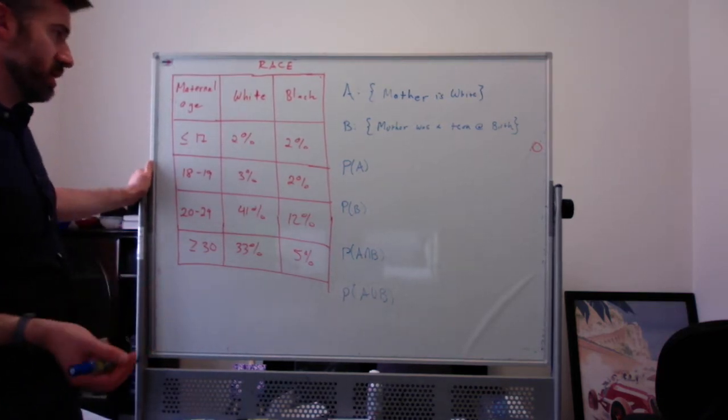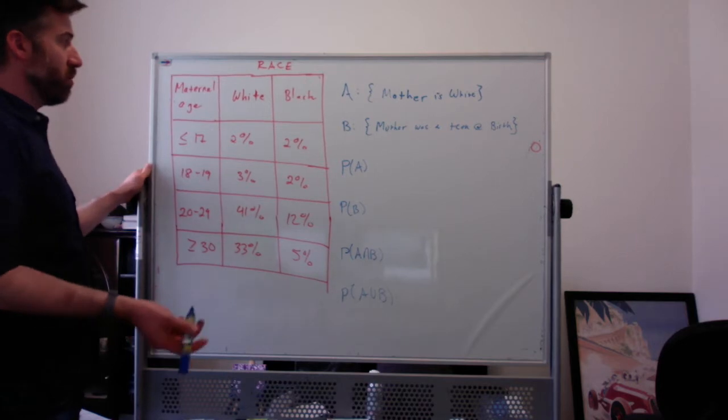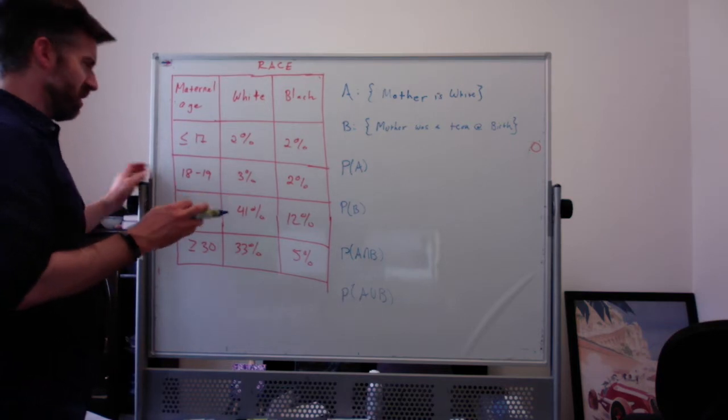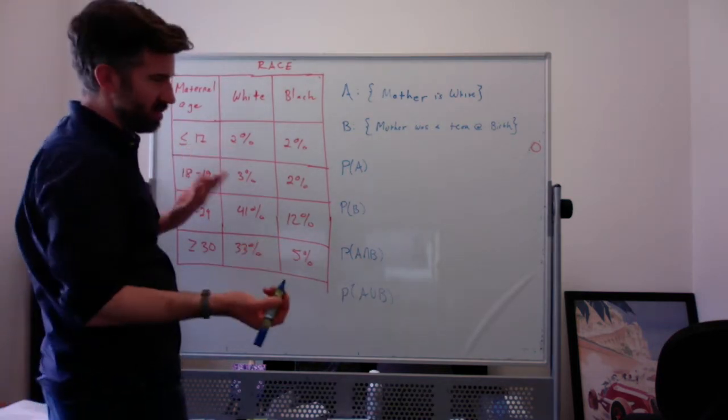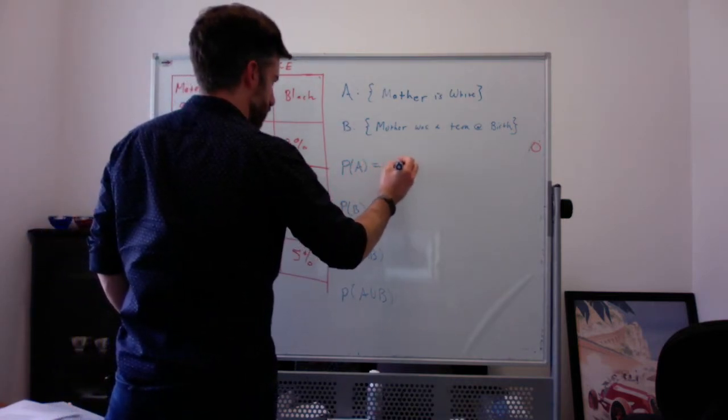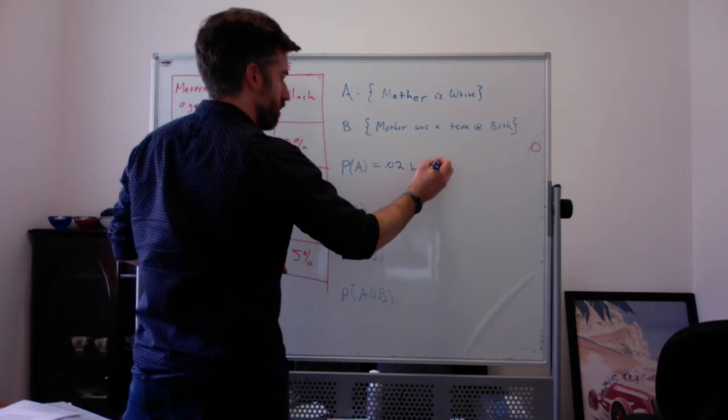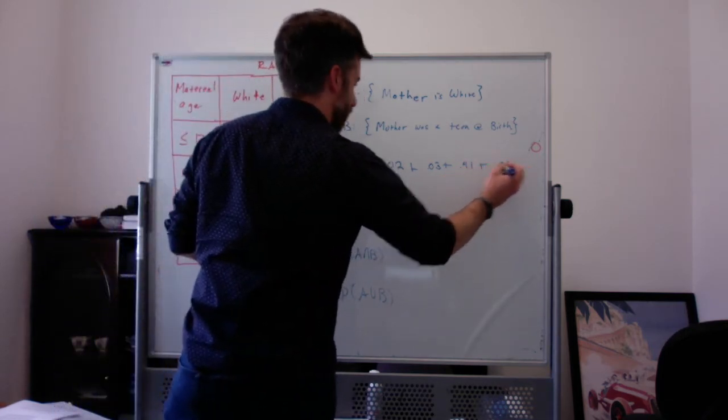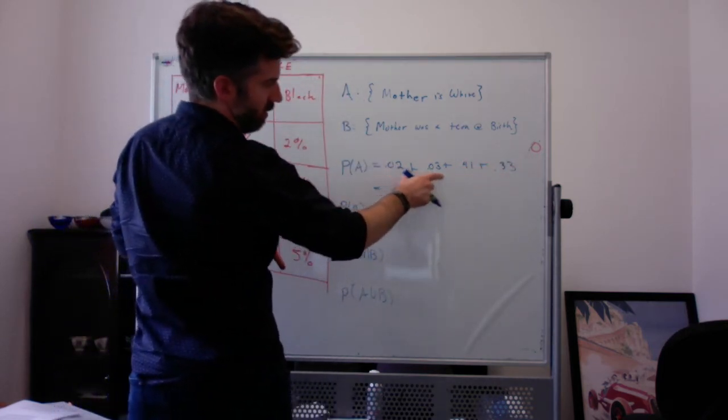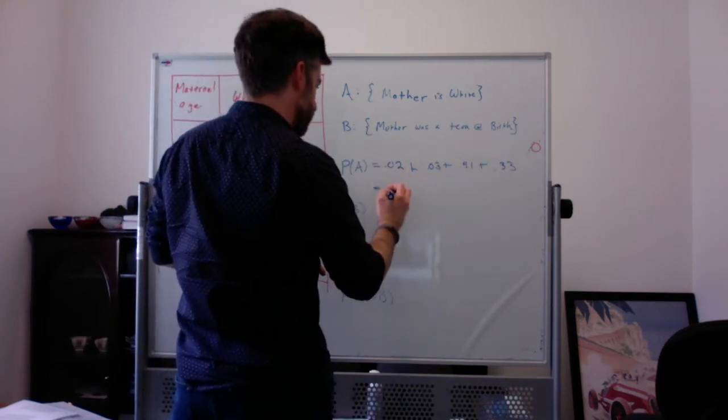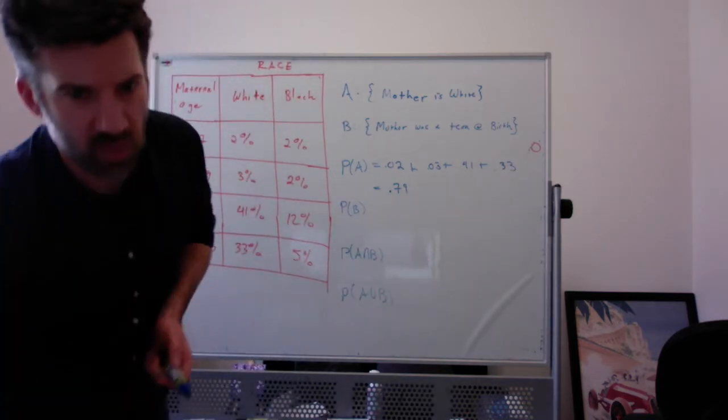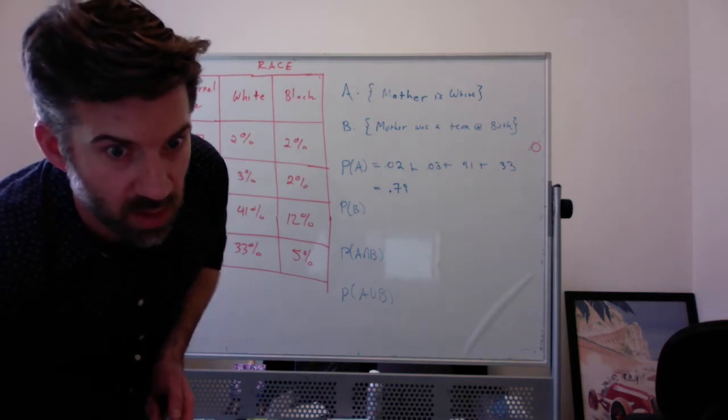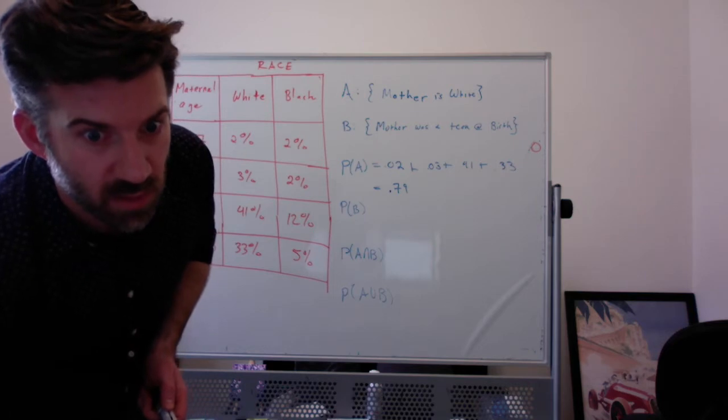So the first question is, what's the probability of A? Well, if I look at the probability that the mother is white, I'm going to add up all these probabilities, which is 0.02 plus 0.03 plus 0.41 plus 0.33. If we add that up, we get 79%, although we usually answer probabilities with a decimal. I'm just double checking that my answer looks like his answer. And I believe it does. Yeah, totally.